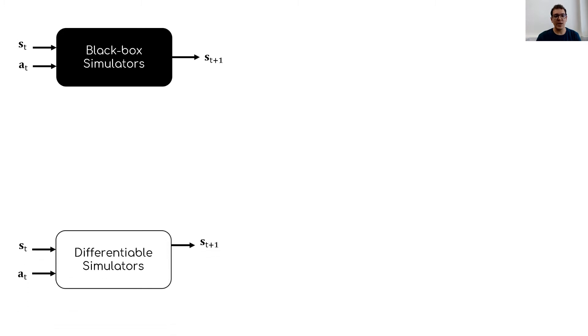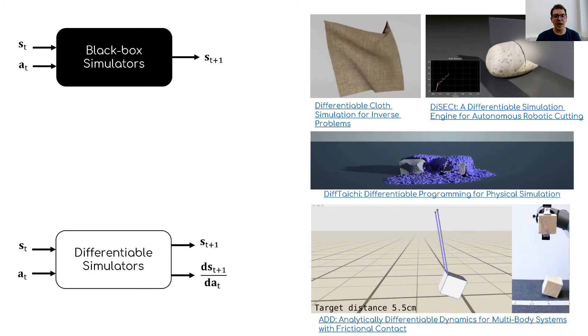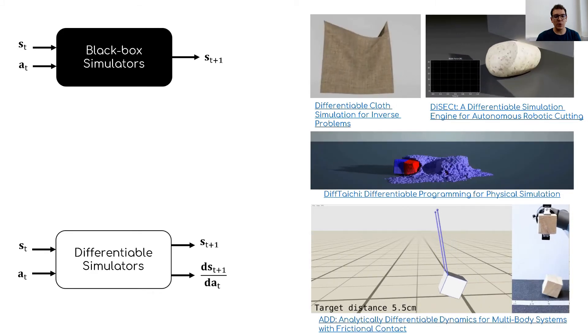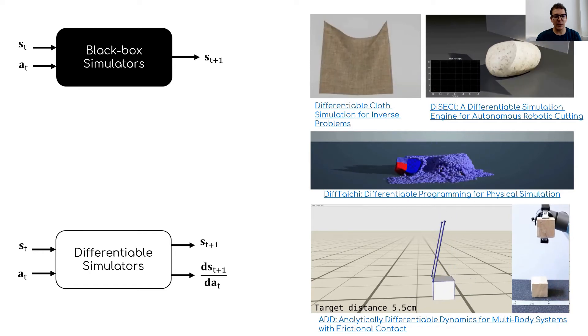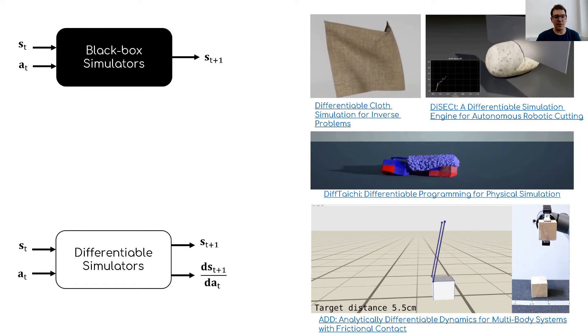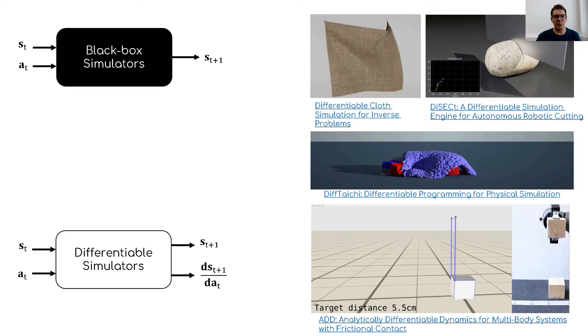Currently, there is a new and emerging class of differentiable simulators that, provided the same information, can also output derivatives that represent how the next state changes as the current action changes. These simulators are now capable of dealing with a wide variety of systems, ranging from cloth deformation, fracture dynamics, deformable objects that interact with fluids, and even friction. Moreover, some of these efforts have been validated in the real world.